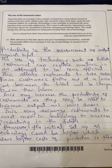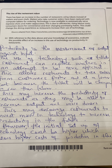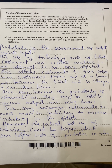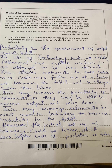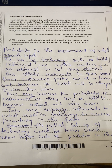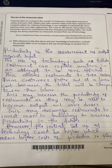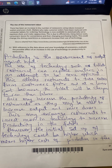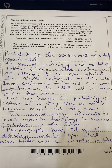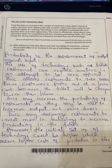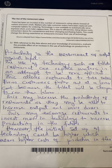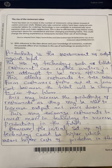Evaluate the possible effect of an increase in the use of technology on productivity in restaurants. Productivity is the measurement of output against input. The use of technology such as tablets will allow restaurants to replace waiters, enabling faster and lower-cost order-taking. This may increase productivity as restaurants can serve more diners. However, the initial setup cost of technology could be higher, meaning higher cost of production in the short term.